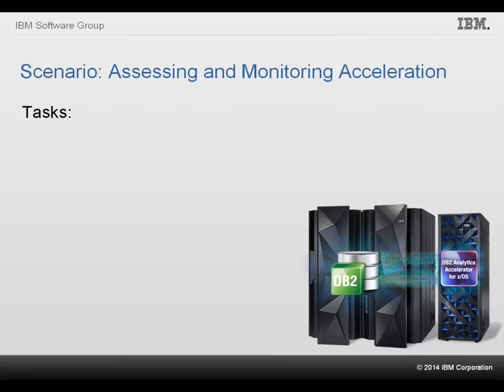In this video, we will show how an organization can use some of these DB2 and Optum database tools to improve performance for analytics workloads. In this scenario, the IT team wants to use the IBM DB2 Analytics Accelerator for ZOS to accelerate their analytics applications. They will do this in four main steps.